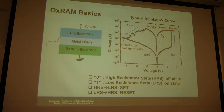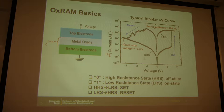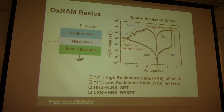This is a typical IV characteristic of this device shown in log scale of current. Initially the current is very small, and when you increase the voltage beyond some threshold voltage, it will set from the high resistance state (HRS) to the low resistance state (LRS). To switch back, you reverse the voltage polarity to negative, and the device resets from LRS to HRS. You can use those two states to represent zero and one, and you can also program the device into different resistance states for multi-level operations.